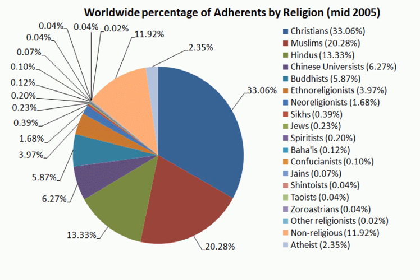Both Jainism and Buddhism spread throughout India during the period of the Magadha Empire. Buddhism in India spread during the reign of Ashoka of the Maurya Empire, who patronized Buddhist teachings and unified the Indian subcontinent in the 3rd century BCE. He sent missionaries abroad, allowing Buddhism to spread across Asia. Jainism began its golden period during the reign of Emperor Kuruvala of Kalinga in the 2nd century BCE.